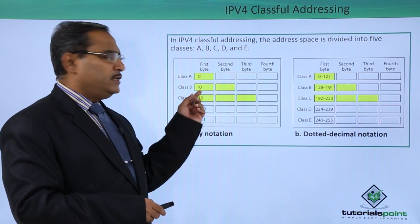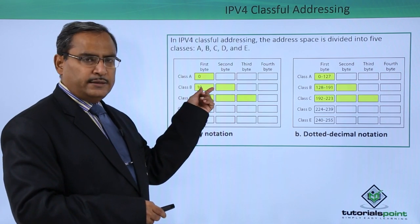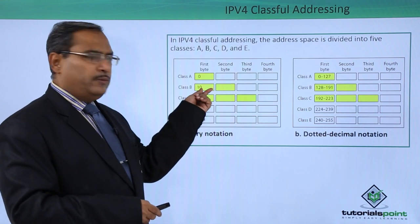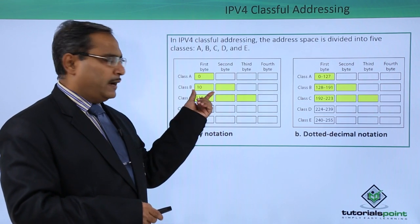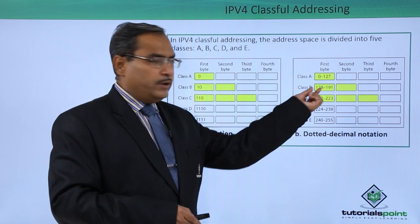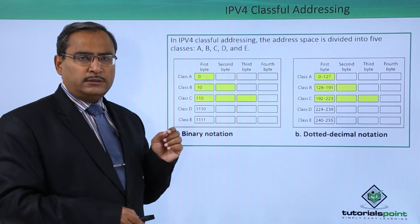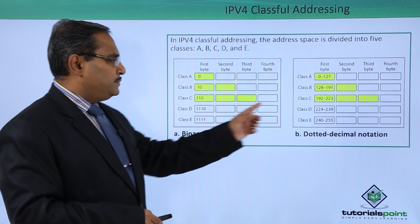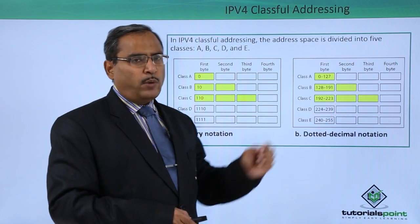In Class B, the first 2 bits are permanently 1 and 0. That leaves 6 flexible bits in the first byte. With all 6 zeros the minimum value is 128 (1 followed by 7 zeros). With all 6 ones that adds 63, giving 128 plus 63 equals 191. So Class B ranges from 128 to 191.